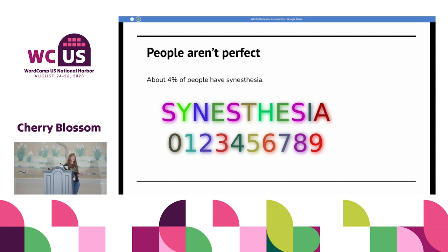Synesthesia — most people have never heard of this, but it affects approximately 4% of the population. It's a spectrum. What happens is letters and/or numbers take on colors. Imagine trying to do an hour-long math class when the numbers decided to all take on colors. And some people affected by synesthesia have numbers that even take on taste. Imagine tasting numbers for an entire hour — and you wonder why some of these people don't perform well in math classes under traditional systems.